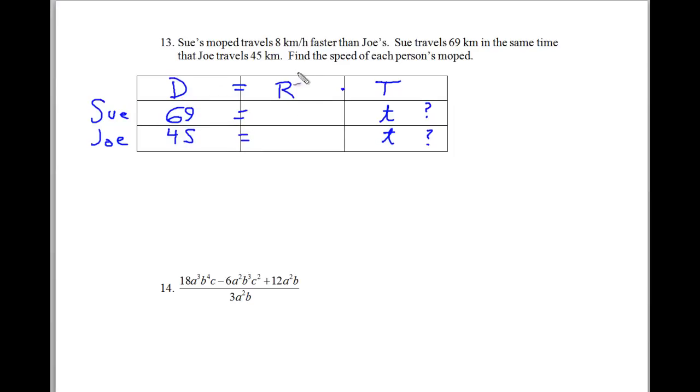Now the speeds are different though, because you would expect Sue to be driving faster. And she's driving 8 kilometers per hour faster than Joe's. So the rate is going to be x plus 8. And Joe's just going to be traveling x. Now again, we're going to write our two equations here. 69 equals x plus 8 times t. And here we have 45 is equal to x times t.